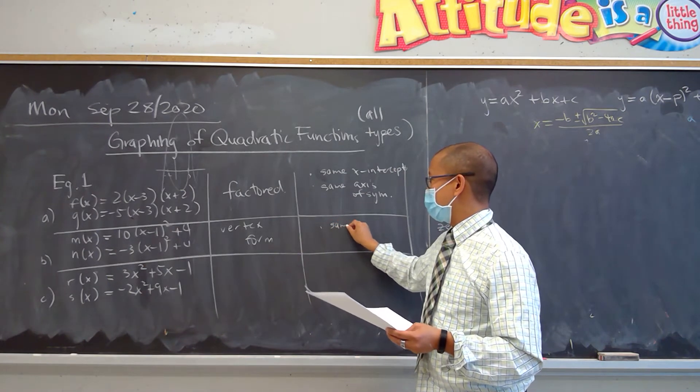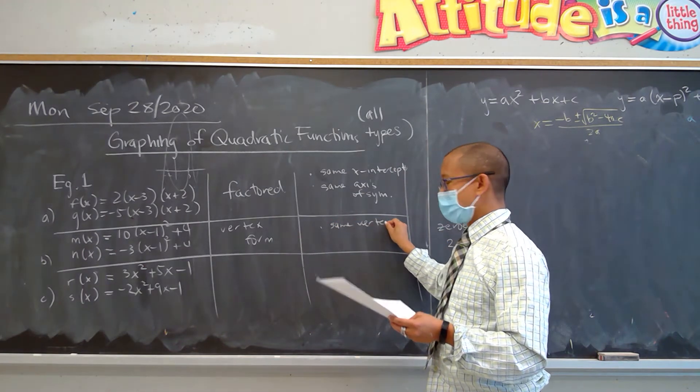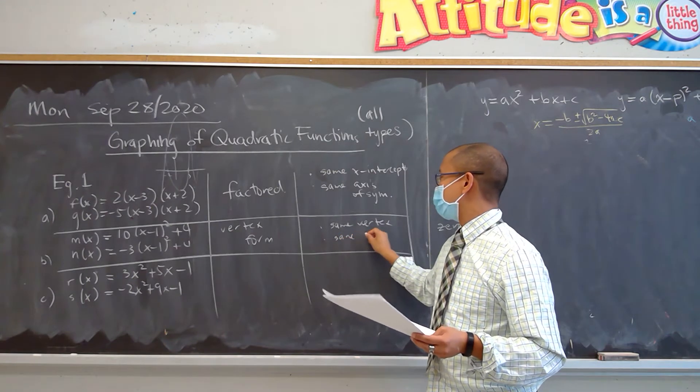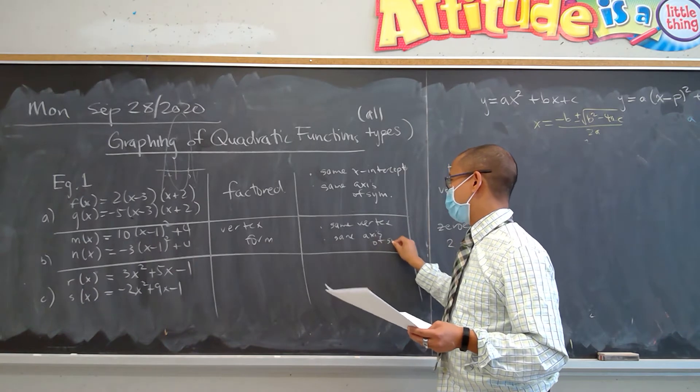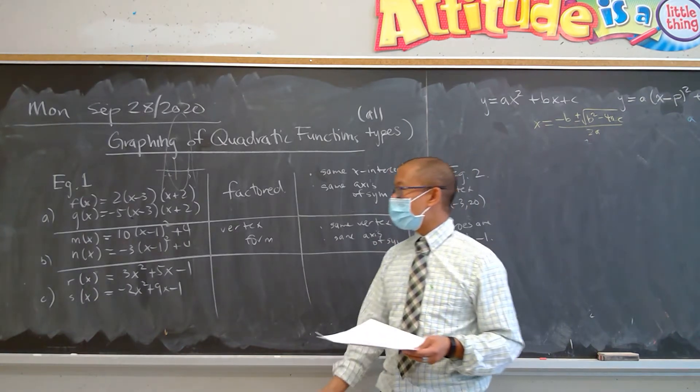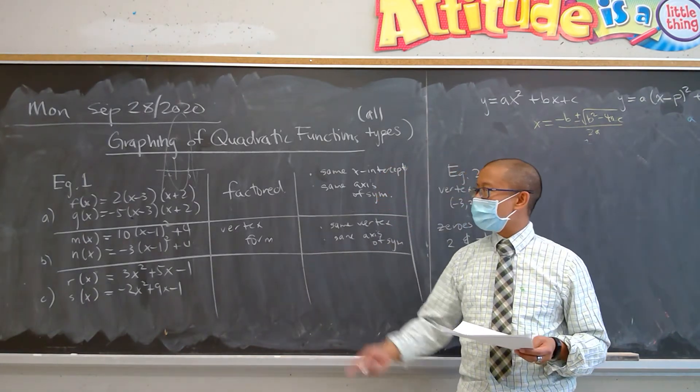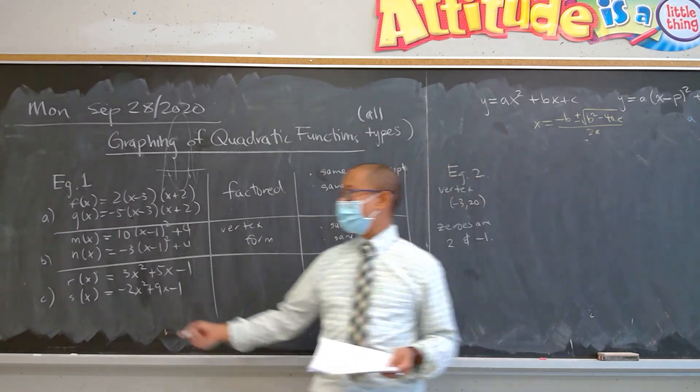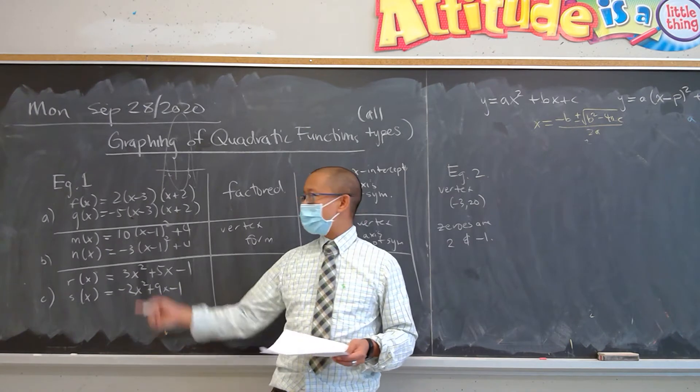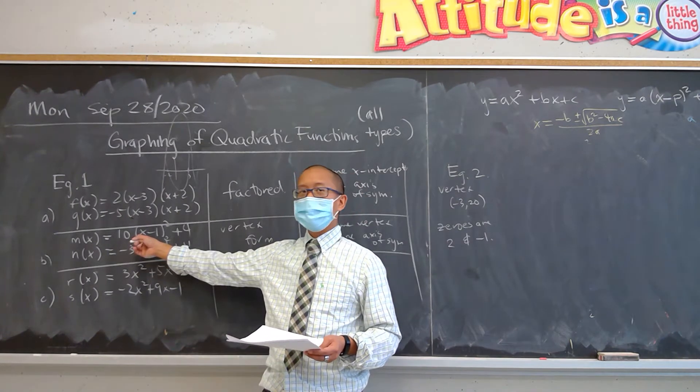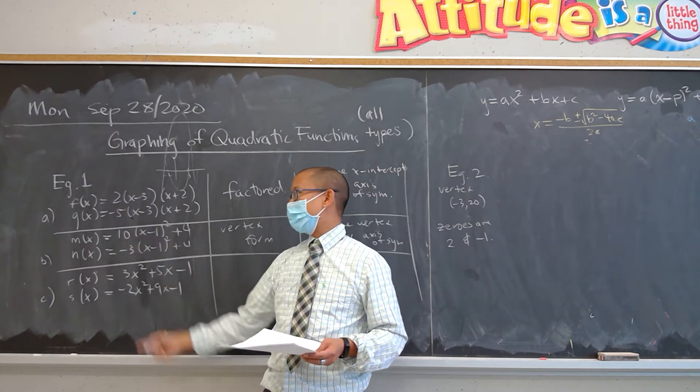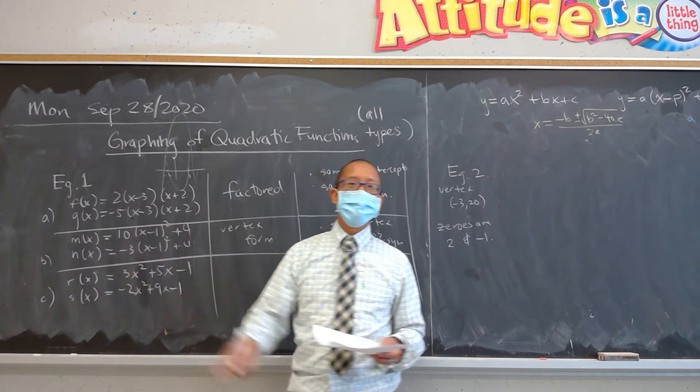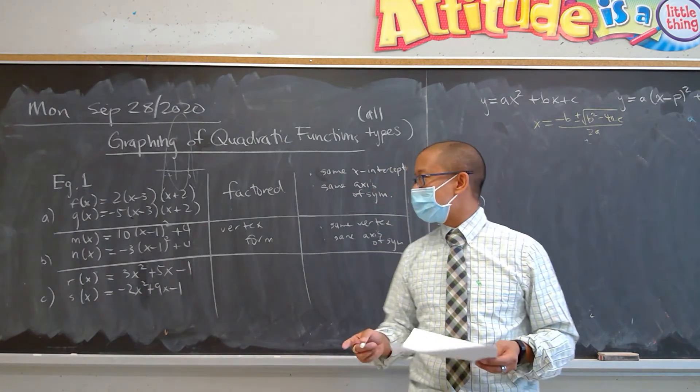If someone was giving you standard form and you completed the square, you'd realize that they have the same, it's the same family for this one. Because they have the same vertex. They have the same vertex, which is 1 and 4 for both examples m(x) and n(x). But just like in our first example, if you wanted to talk about differences, for m(x), that is a vertical stretch by factor of 10, and this is a vertical stretch by factor of 3 but also reflected.